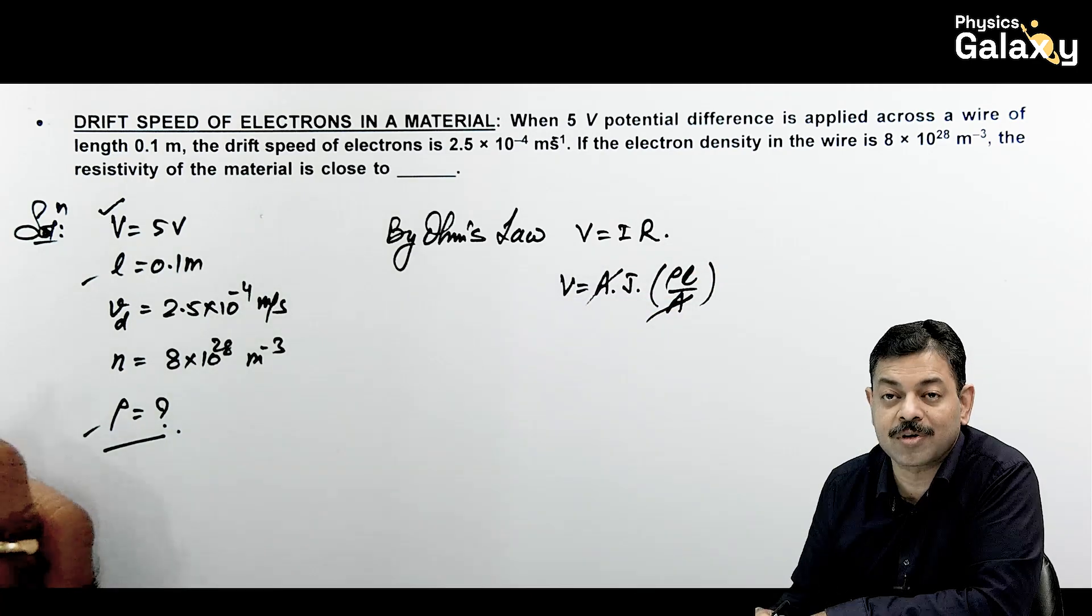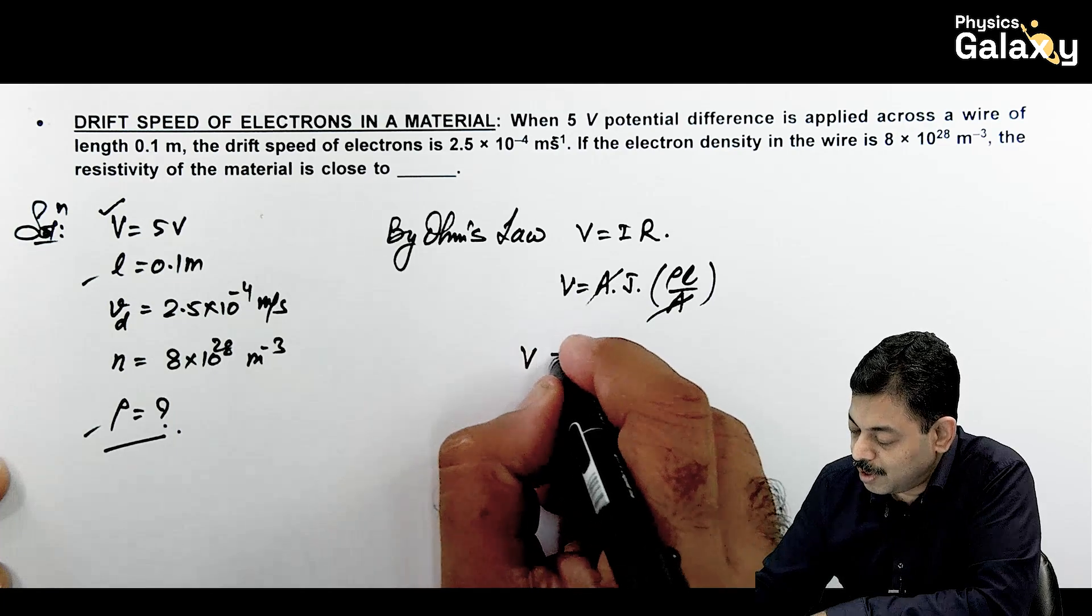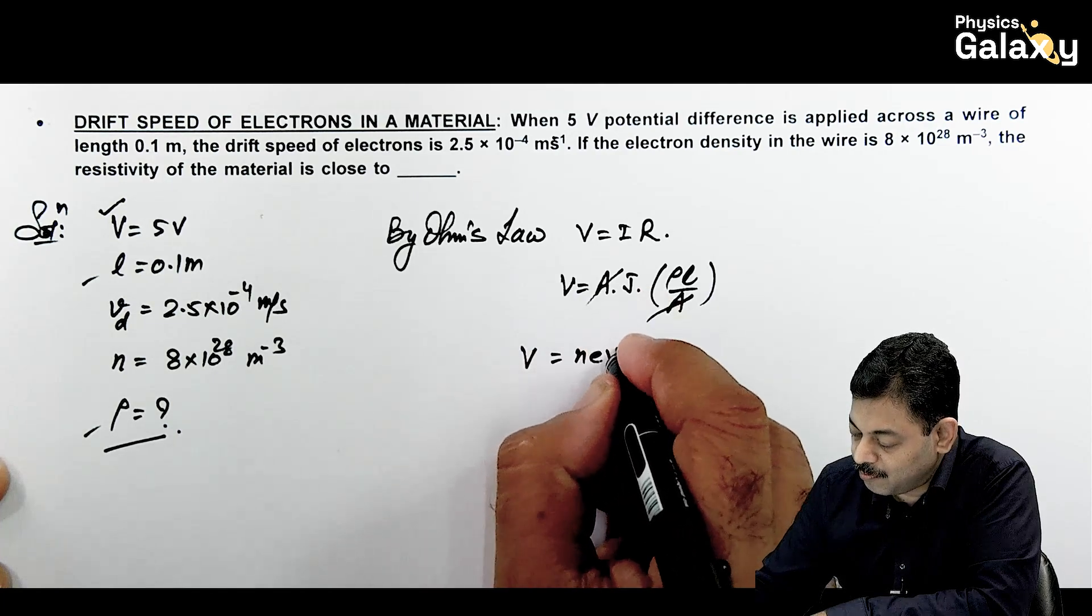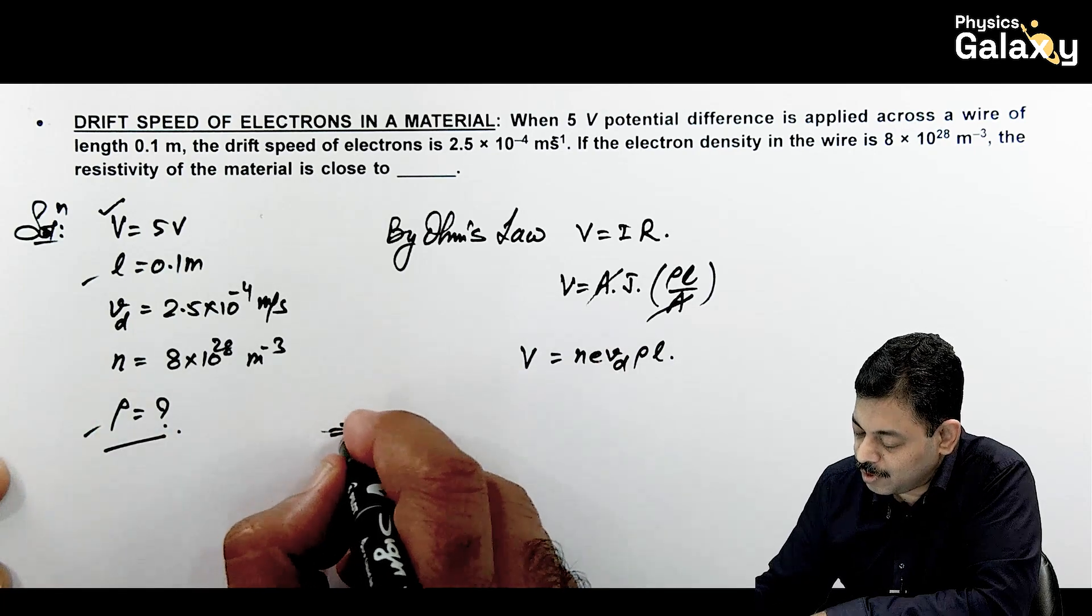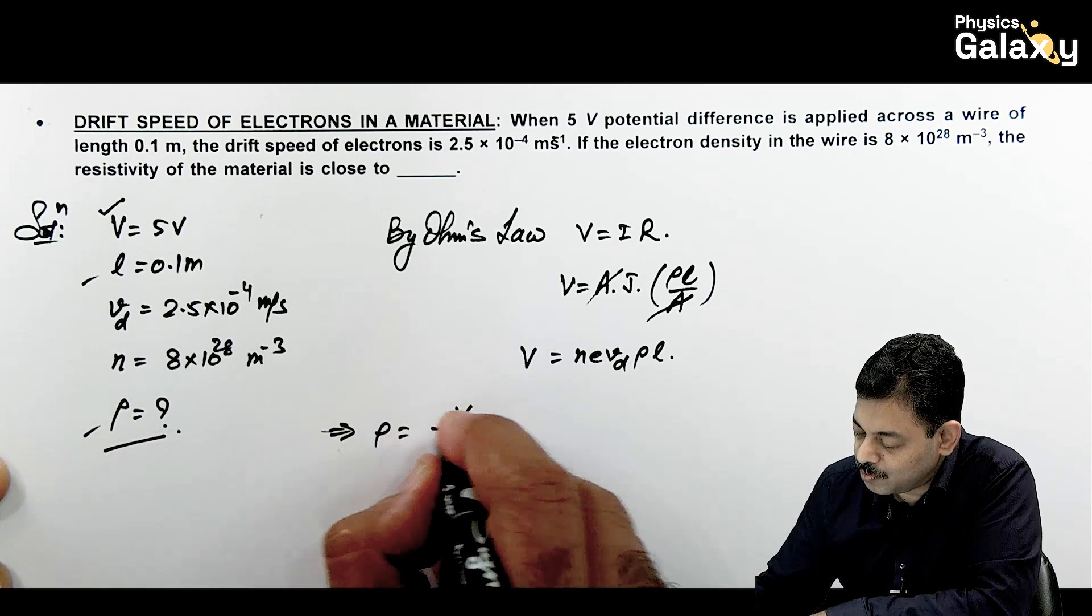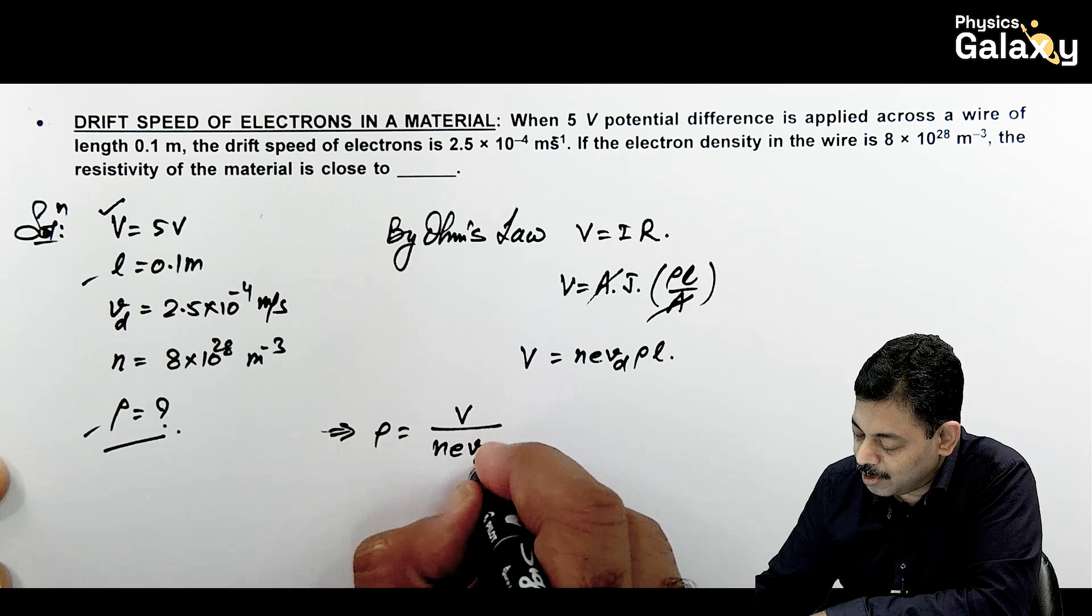You can see this value of cross-sectional area gets cancelled out, and J can be written as NEVD multiplied by rho L. Since rho is asked in the question, directly you can check the value of rho equals V by NEVDL.